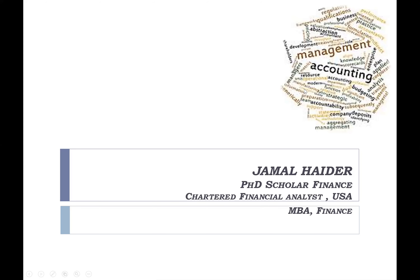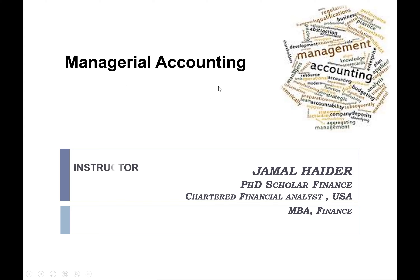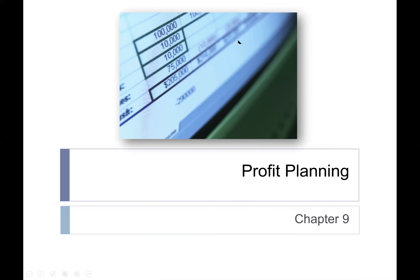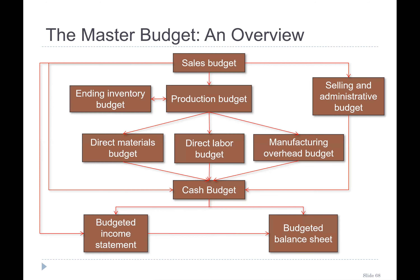Hello class, welcome to our 14th lecture series on managerial accounting. I'm your instructor Jamal Aydar. In our previous lecture we were talking about profit planning and budgeting. We covered the master budget plan starting from the sales budget, then the production budget, and from the production budget we calculated the direct material, direct labor, and manufacturing overhead budgets.